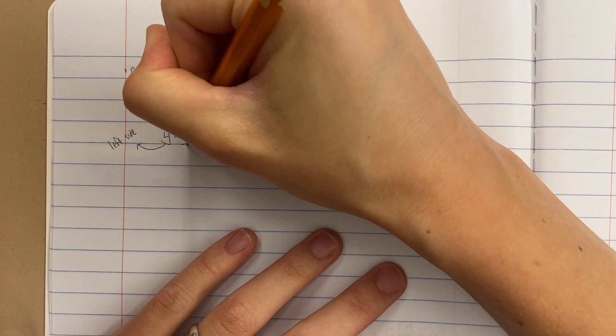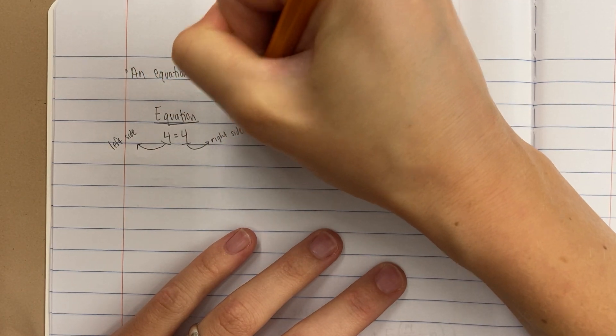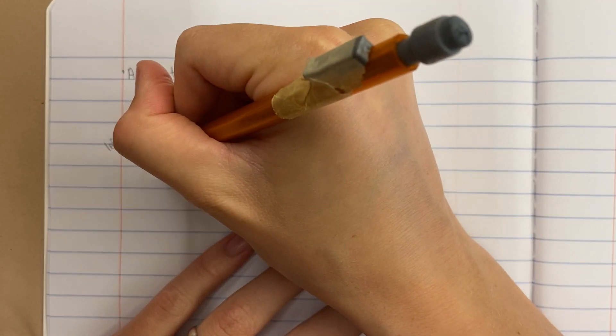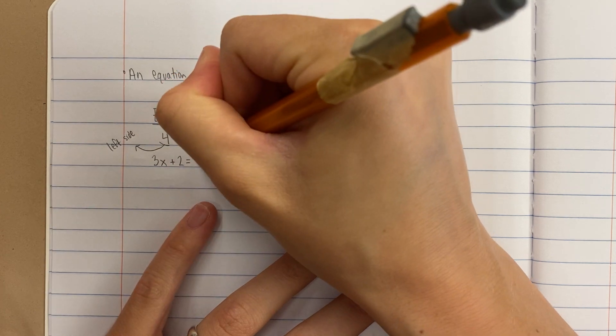And this equation, just like all equations, have a left side of the equation and a right side of the equation. This is also an equation: 3x plus 2 equals 7.